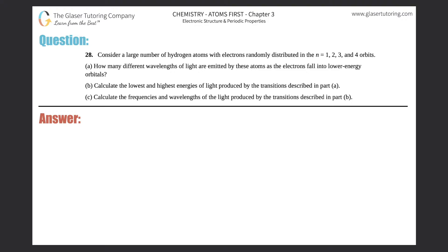Number 28. Consider a large number of hydrogen atoms with electrons randomly distributed in the n equals 1, 2, 3, and 4 orbits. Letter A: How many different wavelengths of light are emitted by these atoms as the electrons fall into lower energy orbitals? We just have to find the complete amount of different wavelengths that can occur when electrons fall into lower energy orbitals.